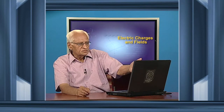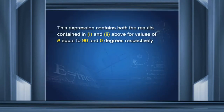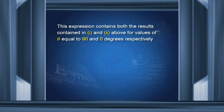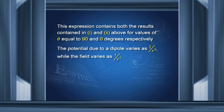This expression contains both limiting results. If you put θ = 90°, you get the result for the equatorial line (potential = 0). If you put θ = 0, you get the result for the axial line. An important thing to notice is that the potential due to a dipole varies as 1/r², whereas the electric field varies as 1/r³.